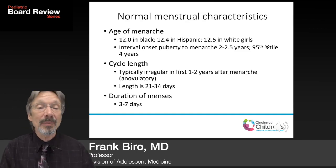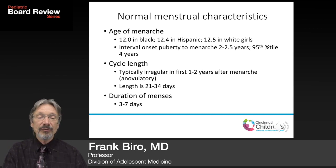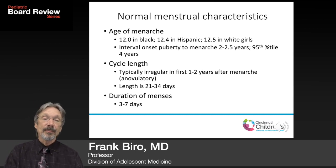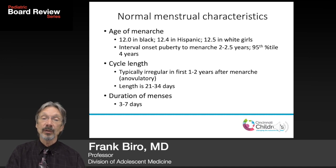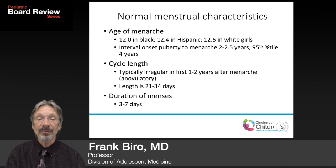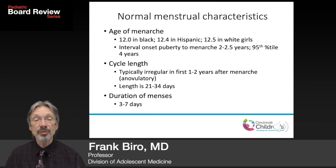Before we can talk about abnormalities, we need to talk about what is normal. The age of menarche — the first menstrual period — is 12.0 years in African-American girls and 12.5 in white girls, a little bit less in Hispanic girls and about the same in Asian girls. The interval from onset of puberty — breast development — to menarche is two to two and a half years.